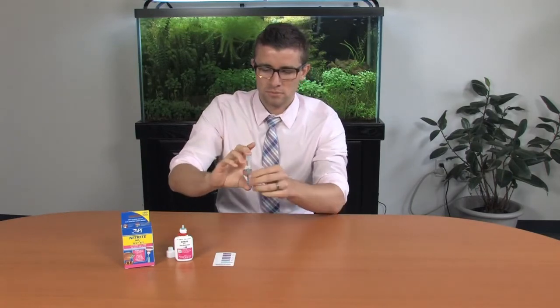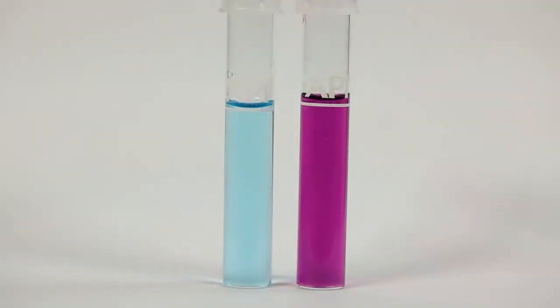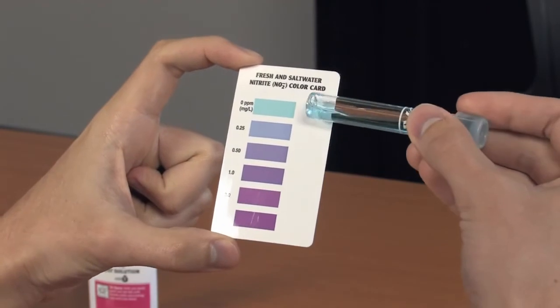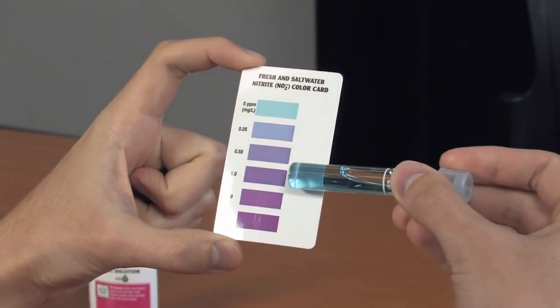Wait five minutes for color development. The test tube will change from pale blue to purple if nitrite is present. Compare the test tube to the color chart. The closest match indicates the nitrite level.